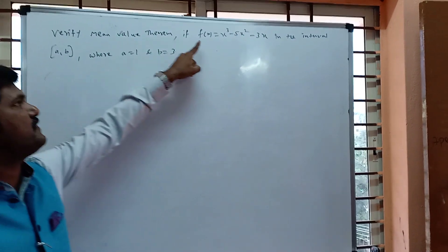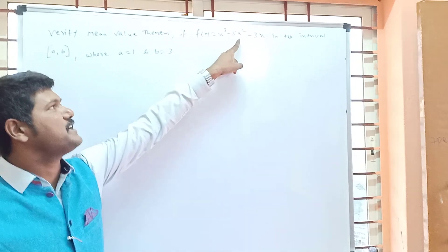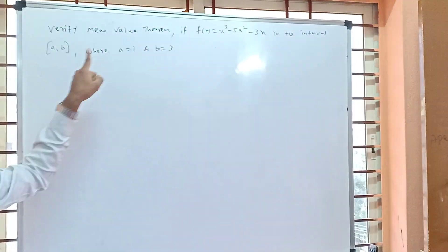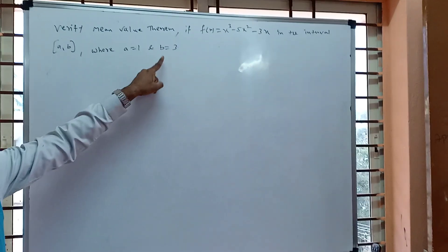Verify mean value theorem if f(x) is given as x³ - 5x² - 3x in the interval [a,b], where a is equal to 1 and b is equal to 3.